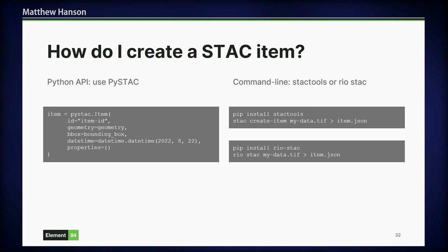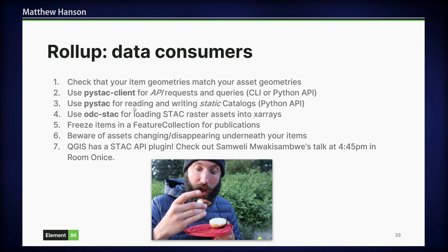Wrapping up with a frequently asked question: how do I create a STAC item? If you're using a Python API, use PySTAC. There are two command line tools I recommend: STAC Tools and RioSTAC. STAC Tools creates a relatively simple basic item; RioSTAC creates a much richer, more configurable one. For data consumers, one thing to be aware of: we've seen cases of assets being reprocessed or disappearing — Landsat being an example. If you're publishing data as part of a paper, it may behoove you to archive the data somewhere else to make sure it doesn't go away.